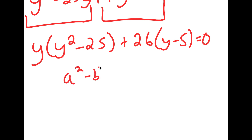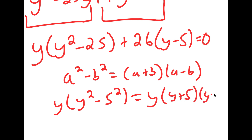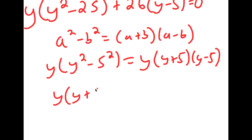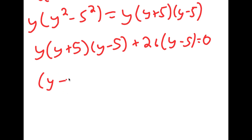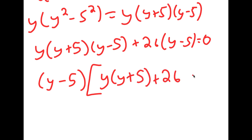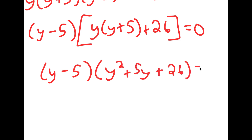Now, if I have something in the form a squared minus b squared, this is equal to a plus b times a minus b. So y squared minus 25, that's the same thing as y squared minus 5 squared, which is going to equal y plus 5 times y minus 5. So I get y times y plus 5 times y minus 5, plus 26 times y minus 5 is equal to 0. And now, if I factor out y minus 5, I get y minus 5 times y squared plus 5y plus 26 is equal to 0.